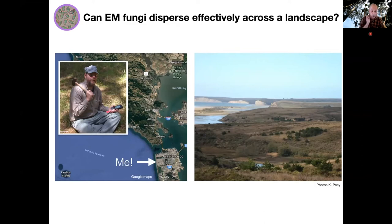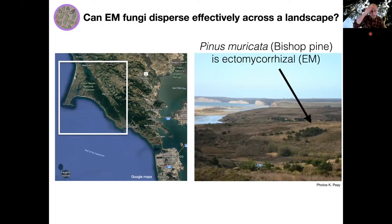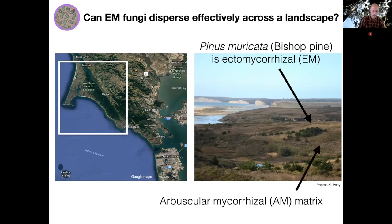One of the reasons working here has been so appealing is you can see this very patchy vegetation structure at the coast. In particular, there's really one species of pine — Pinus muricata, or Bishop pine — which is really the only host for Suellis pungens in this area and the most important ectomycorrhizal tree in this coastal vegetation. It occurs in a primarily arbuscular mycorrhizal vegetation matrix made up of Baccharis pilularis — coyote brush — mostly. Because Suellis and other ectomycorrhizal fungi are obligate biotrophs, this is an ideal landscape for understanding how Suellis disperses across this fragmented landscape.